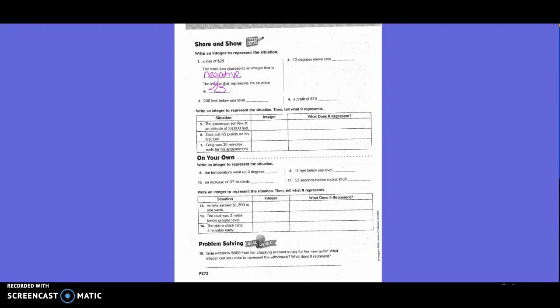Number two: 73 degrees above zero. What do we need to underline? 73 and above. That means it's positive 73. Number three: 200 feet below sea level. What am I going to underline? 200 and below. That's negative 200.